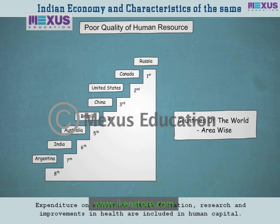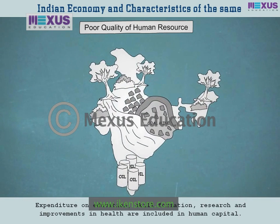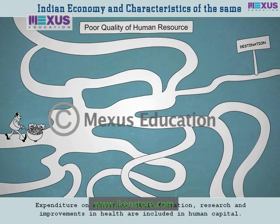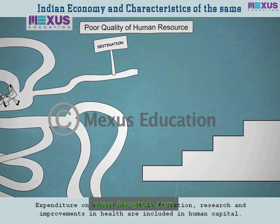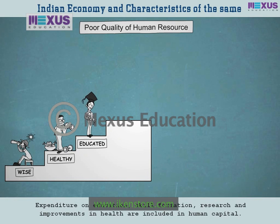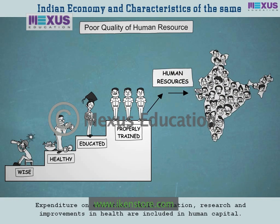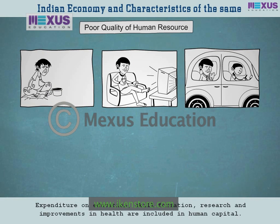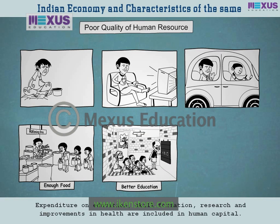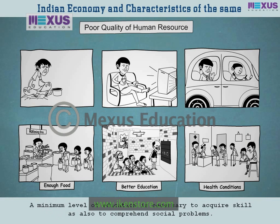Poor quality of human resource. India is the seventh largest country in the world and is blessed with many natural resources. But all these resources cannot help our country unless they are tapped, handled and used in a planned way. This can be done only by the citizens of our nation. Man can develop these existing resources only when he is wise, healthy, educated and properly trained. Thus, the real resources of our country are its people — our human resources. The living conditions of the people can be improved by providing enough food, better education and health conditions. A minimum level of education is necessary to acquire skill and also to comprehend social problems.